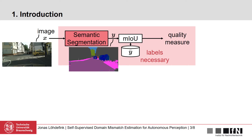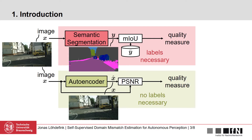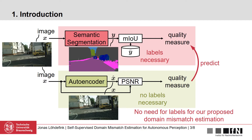Semantic segmentation is a common perception function in autonomous driving, which takes an image and produces a semantic segmentation prediction that can be evaluated with the ground truth via the mean intersection over union. We use a self-supervised autoencoder to reconstruct the input image, which can be evaluated via the PSNR without the need for labels. Afterwards, we use the PSNR to predict the performance of the semantic segmentation, again without the need for labels.